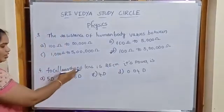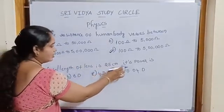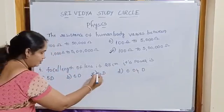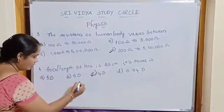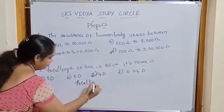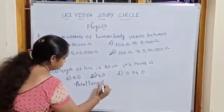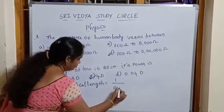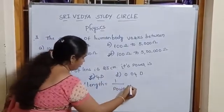Focal length of a lens is given 25 centimeters. Its power of lens is, option is C. Already we know that focal length is equal to 1 by power in meters.